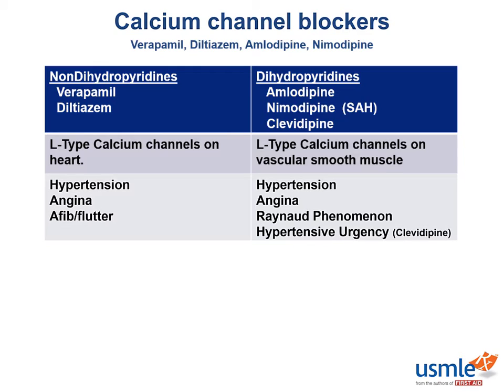Now we shift gears into the dihydropyridines — they all end in '-dipine.' These preferentially block vascular smooth muscle cells with less effect on the myocardial calcium channels, except amlodipine and nifedipine, which have equal affinity for both types. The dihydropyridines are more selective for vascular smooth muscle cells, so their clinical utility is for vascular tone issues such as hypertension, spastic or Prinzmetal angina, or Raynaud phenomenon.